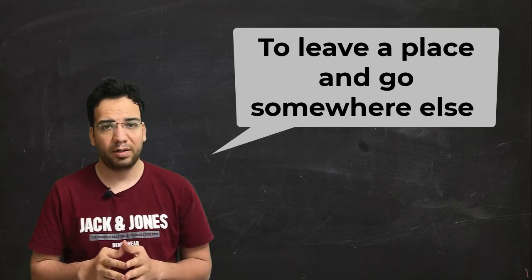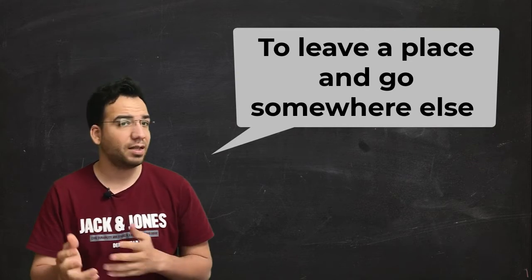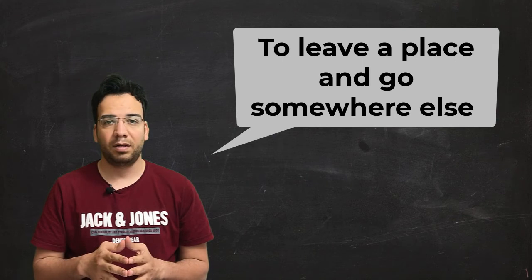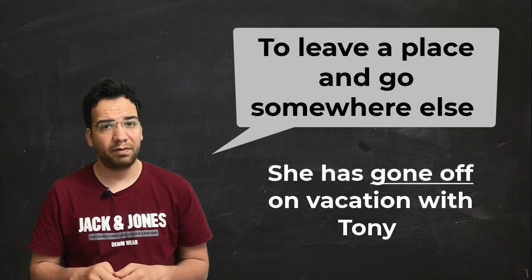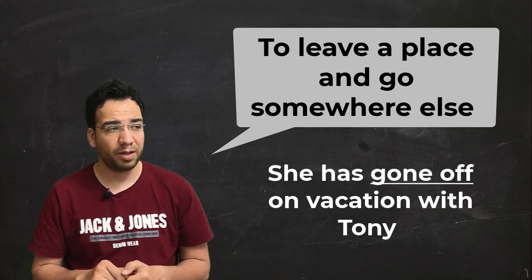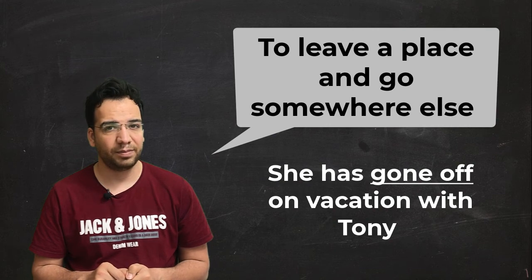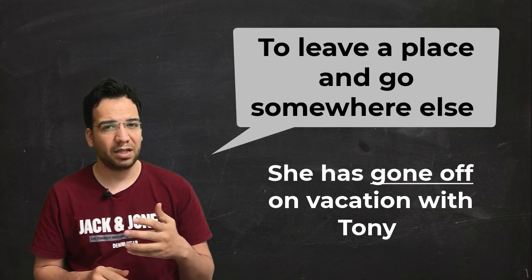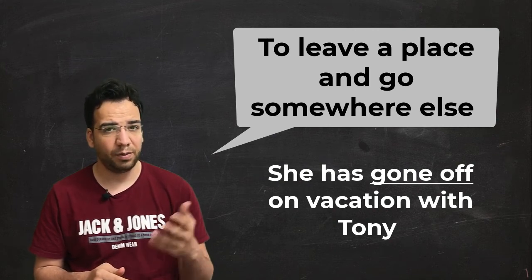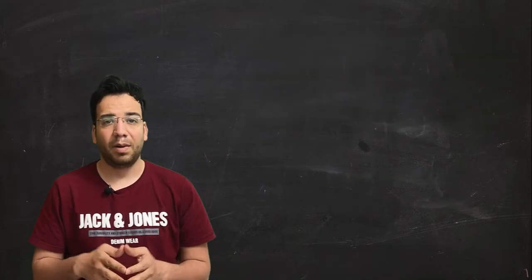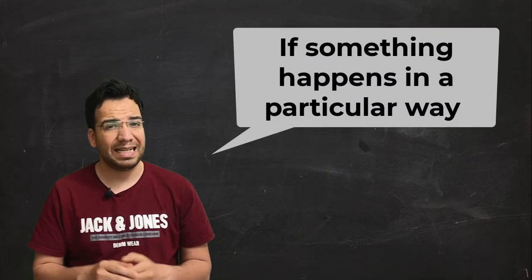The fourth meaning of the phrasal verb go off: here go off means to leave a place and go somewhere. Yes, to leave a place and go somewhere. For example, Sarah my friend, she has gone off with Tony on vacation. Yes, she has gone off on vacation with Tony.